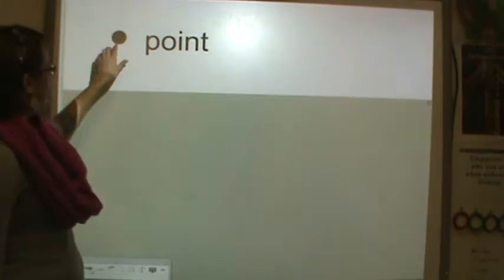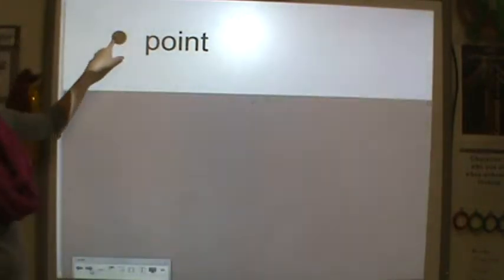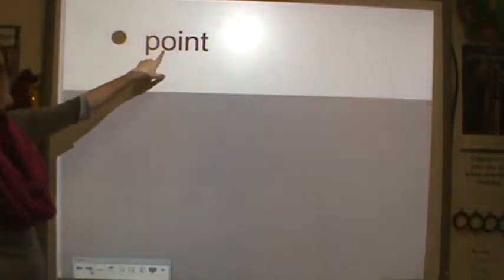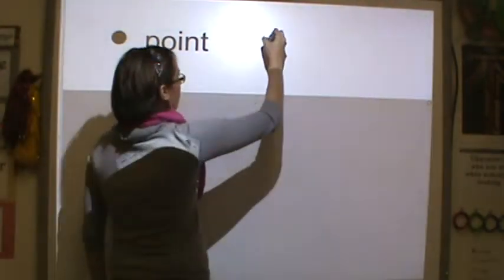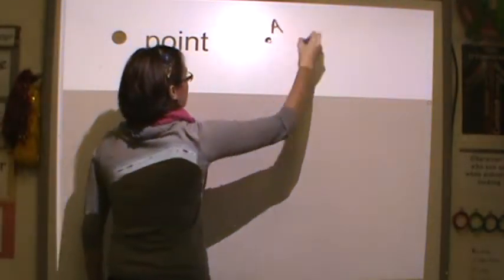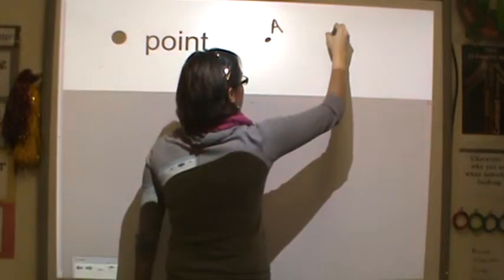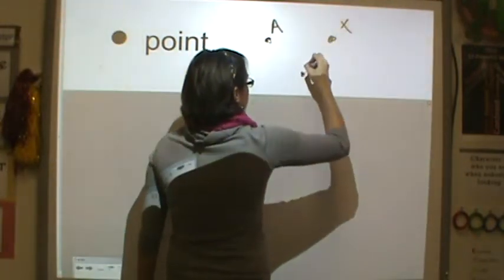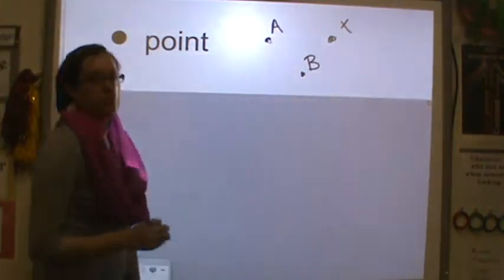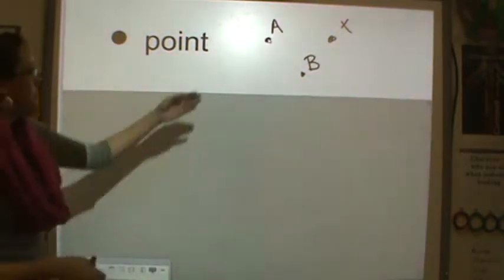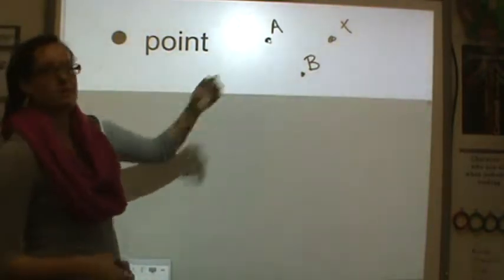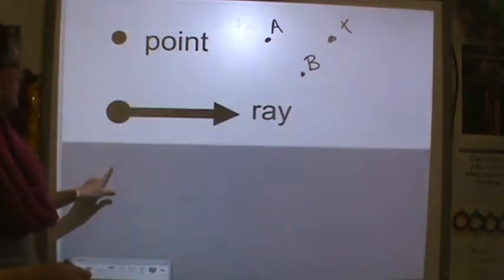So let's get started. This right here — I know it looks like a period — when we are talking in geometry, that's called a point. You can have a point A, a point X, a point B. Usually in geometry things are labeled with letters, so these are all examples of points.